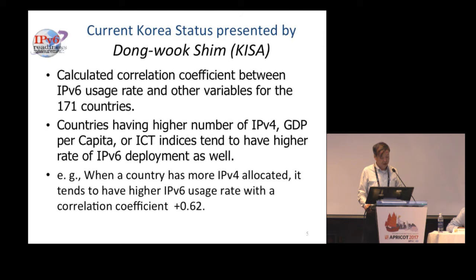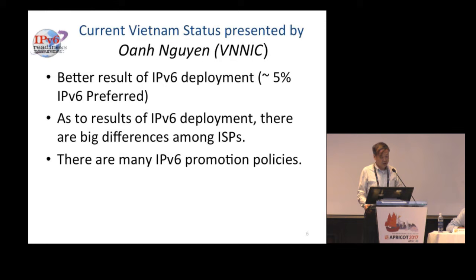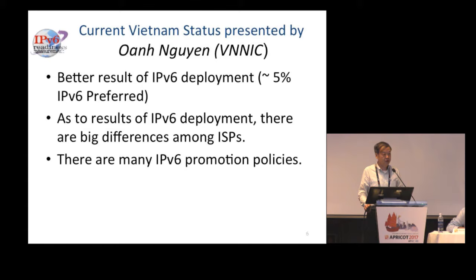They calculated the correlation coefficient between IPv6 usage rate and other variables for 171 countries. The result shows countries having a higher number of IPv4 allocations, higher GDP per capita, and higher ICT indexes tend to have a higher rate of IPv6 deployment — for example, a country with more IPv4 allocated tends to have a higher IPv6 usage rate with a correlation coefficient of 0.62. The third speaker, Ruan Nguyen from VNNIC, introduced IPv6 deployment in Vietnam, showing better results and big differences among different ISPs.